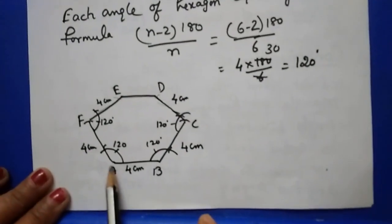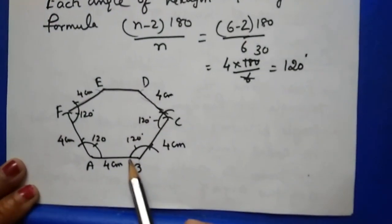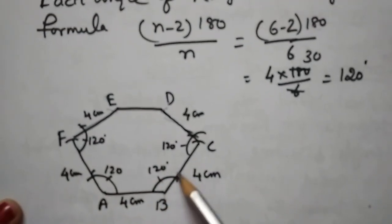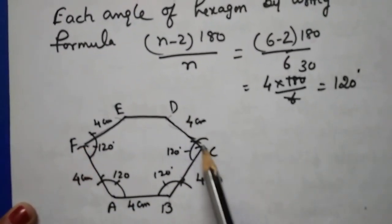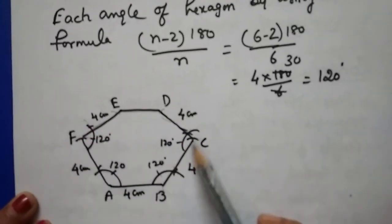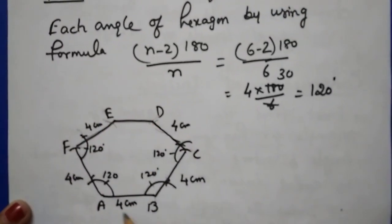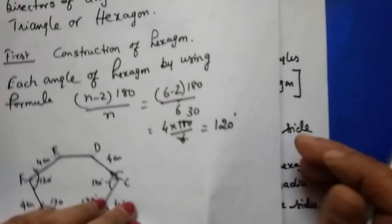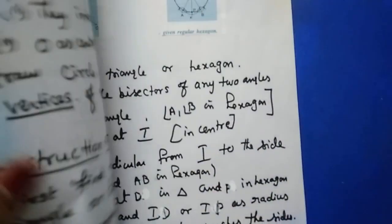To construct a regular hexagon with side 4 cm: draw AB = 4 cm. At B, draw 60° and 120°; through 120° draw a line. From A, also take 120° and draw a line, cut 4 cm. At F, again draw 120°, cut 4 cm, and join the vertices. You will get the regular hexagon. Each angle of the hexagon is 120 degrees.